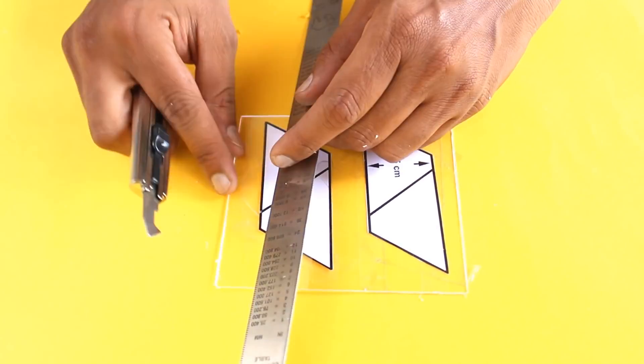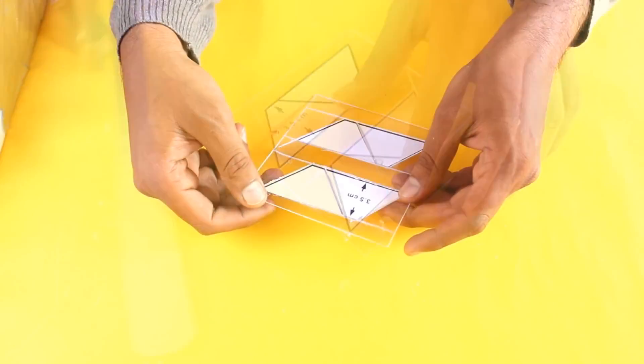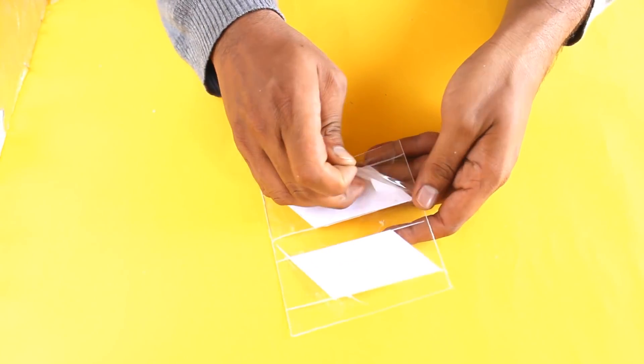Cut the shape according to the template, remove the template from the sheet, and break the pieces.